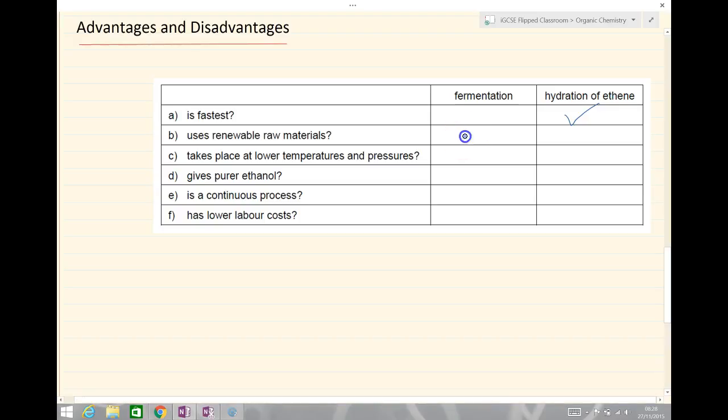Fermentation takes place at lower temperature, room temperature and room pressure, one atmosphere and 30 degrees Celsius, and gives purer ethanol. Well, that one is the hydration of ethene. So we get pure ethanol from hydration of ethene. It's a continuous process.